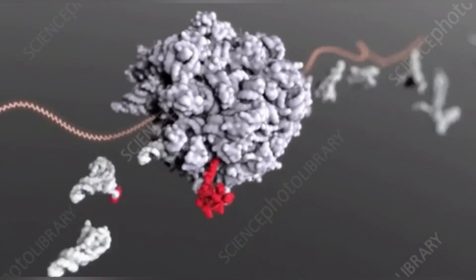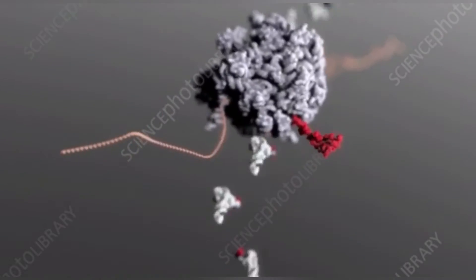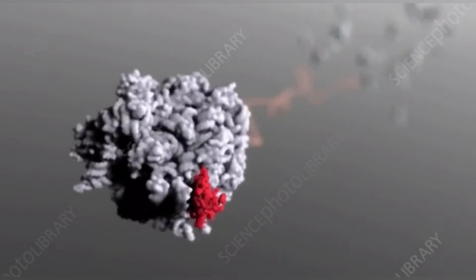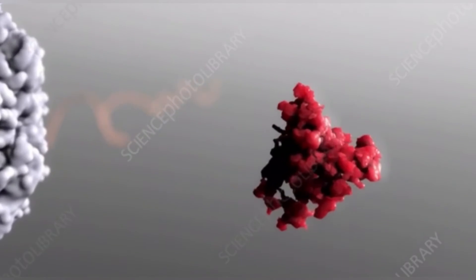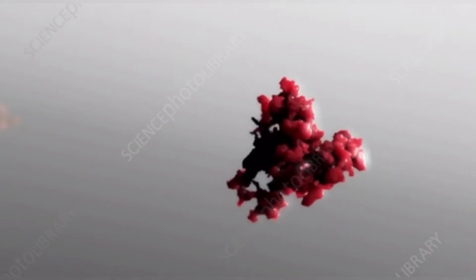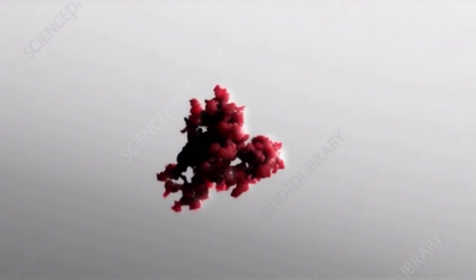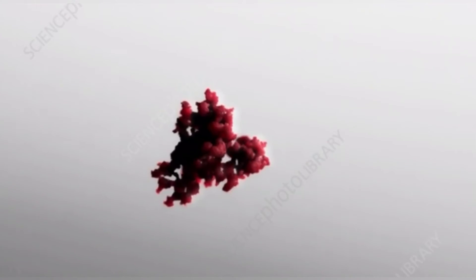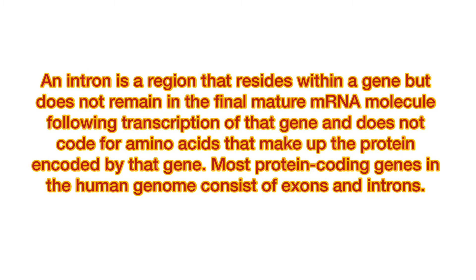Within introns, a donor site, a branch site, and an acceptor site are required for splicing. The spliced donor site includes an almost invariant sequence GU at the 5' end of the intron, within a larger, less highly conserved region. The spliced acceptor site at the 3' end of the intron terminates the intron with an almost invariant AG sequence.